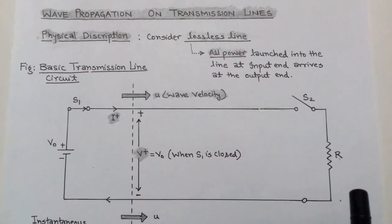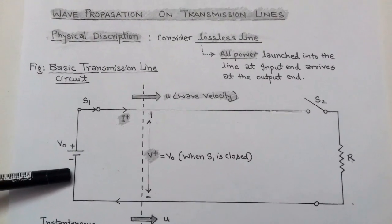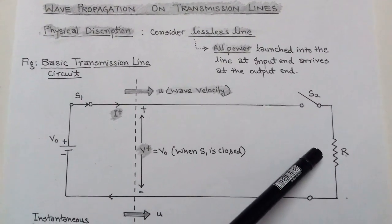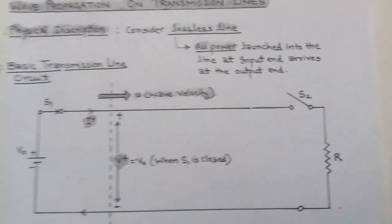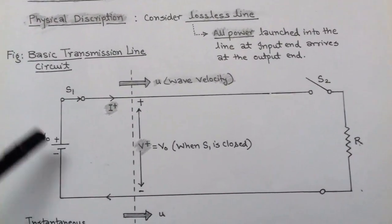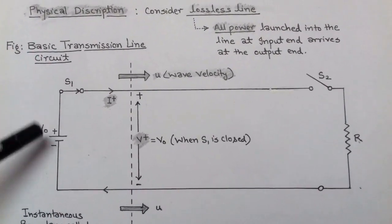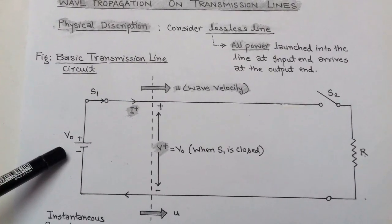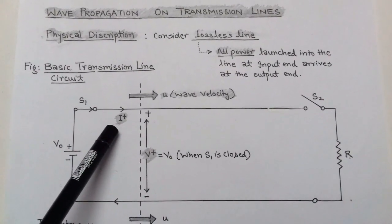For wave propagation we consider a basic transmission line circuit. The transmission line is connected to a source in the form of voltage and a load in the form of resistance. Both the source and load are connected with the help of switches S1 and S2. Initially, switch S1 is closed and S2 is open. As soon as S1 is closed, the voltage source acts and incident current starts flowing, denoted by I+.